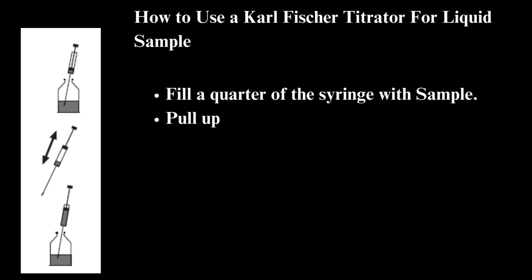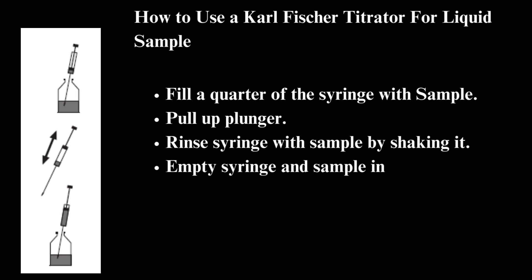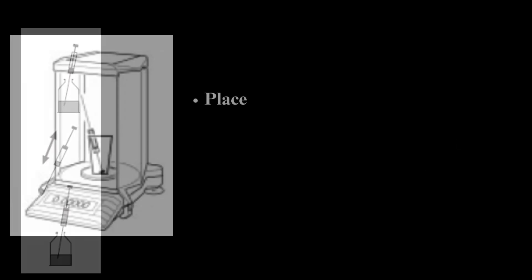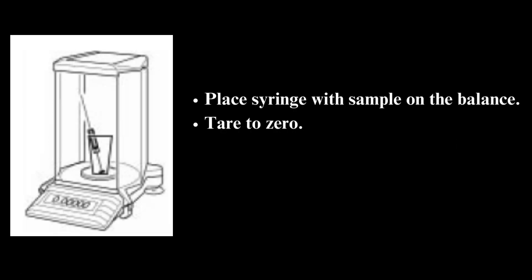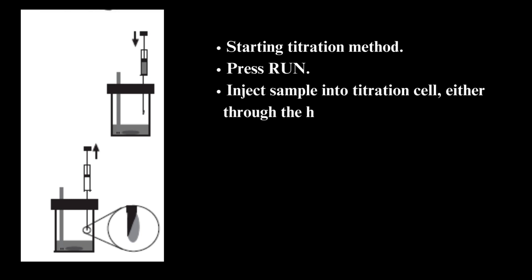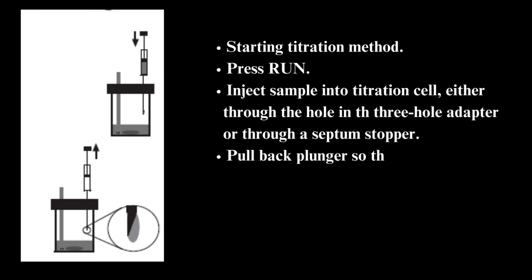How to use a Karl Fischer titrator for a liquid sample: fill a quarter of the syringe with sample, pull up the plunger, and rinse the syringe by shaking it. Empty the syringe and sample into the waste bottle. Fill the syringe with sample and wipe the needle with a paper towel. Place the syringe on the balance and tear to zero. Start the titration method, press run, and inject the sample into the titration cell — either through the hole in the TH3 hole adapter or through a septum stopper.